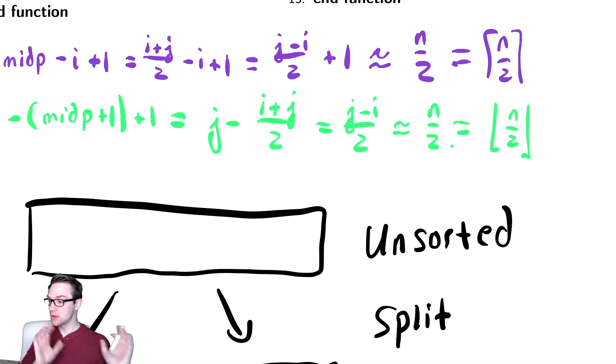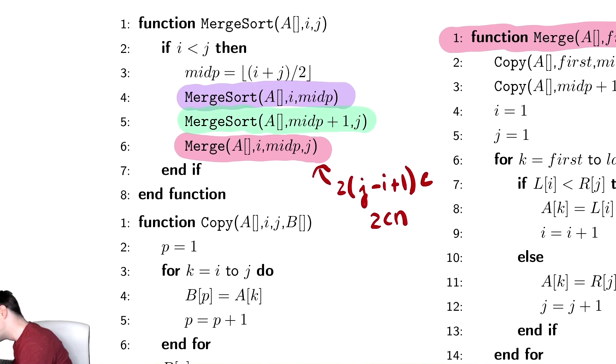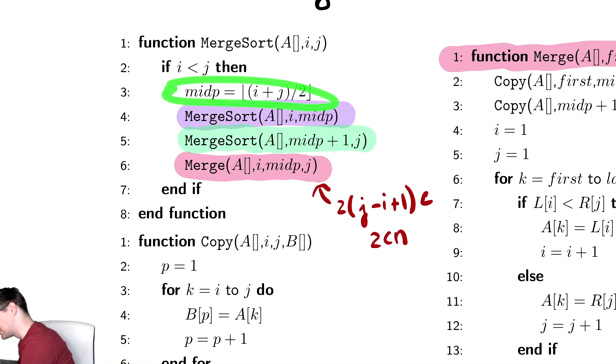So we have the sizes of the recursive calls, which are n over two and n over two. We have the cost of the non-recursive work, which is 2cn. And we have one other thing which occurs, which was computing midp takes constant time. So we need to write down our base case and our recurrence solution, then we can proceed from there.